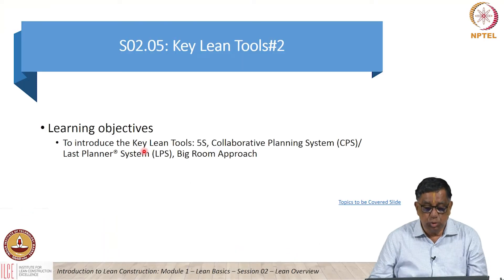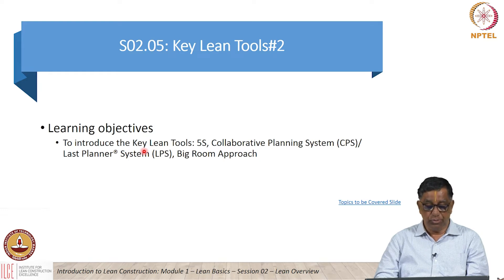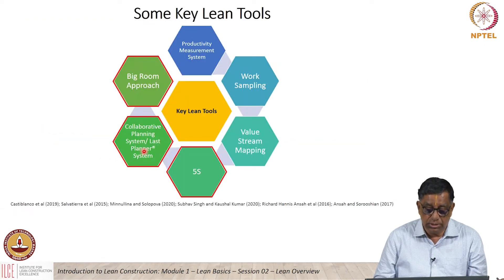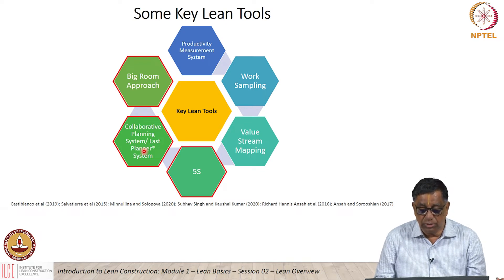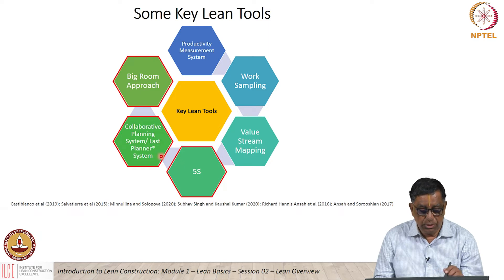In this section 2.05, we introduce the key lean tools: 5S, Collaborative Planning System (CPS), which is based on the Last Planner System and the big room approach. The other key lean tools available include the productivity measurement system, work sampling, value stream mapping, 5S, CPS, and the big room approach.